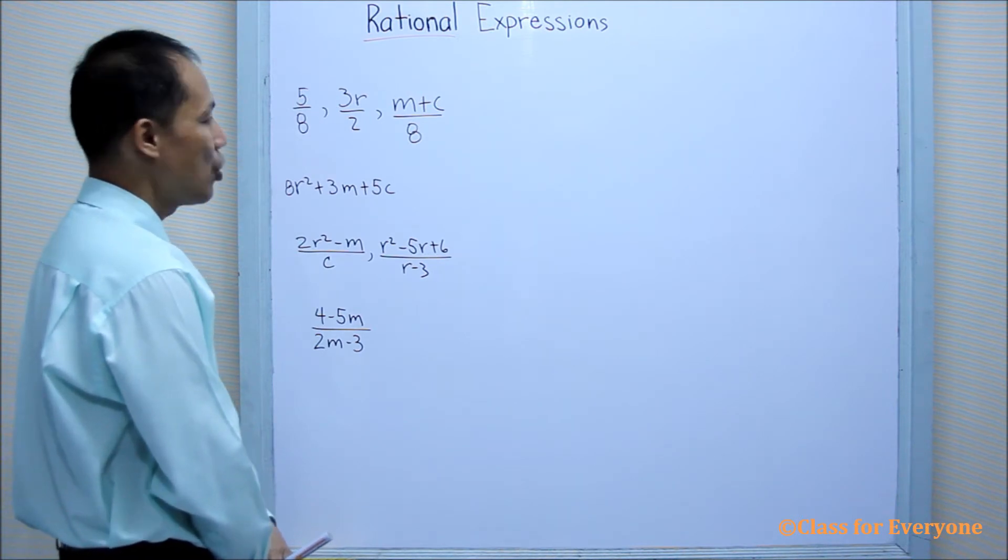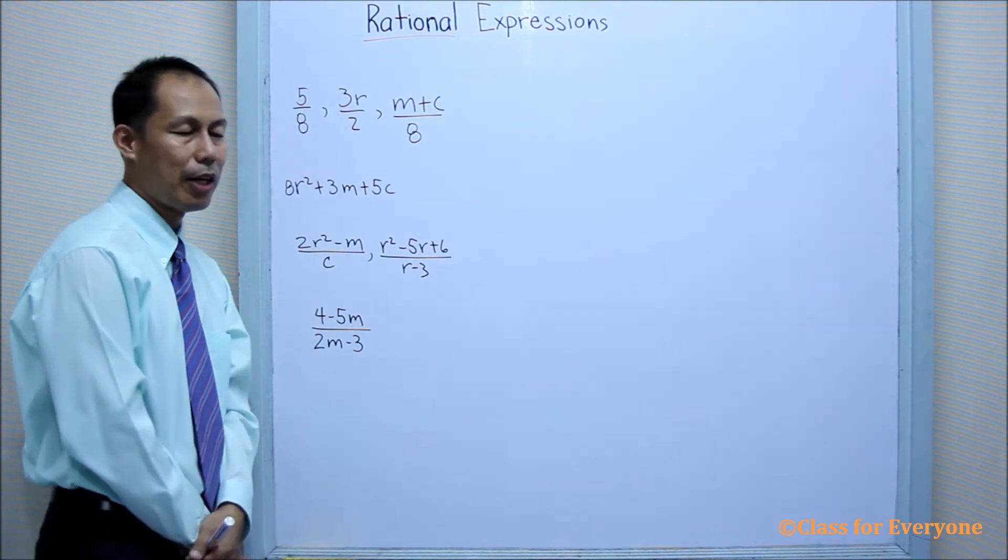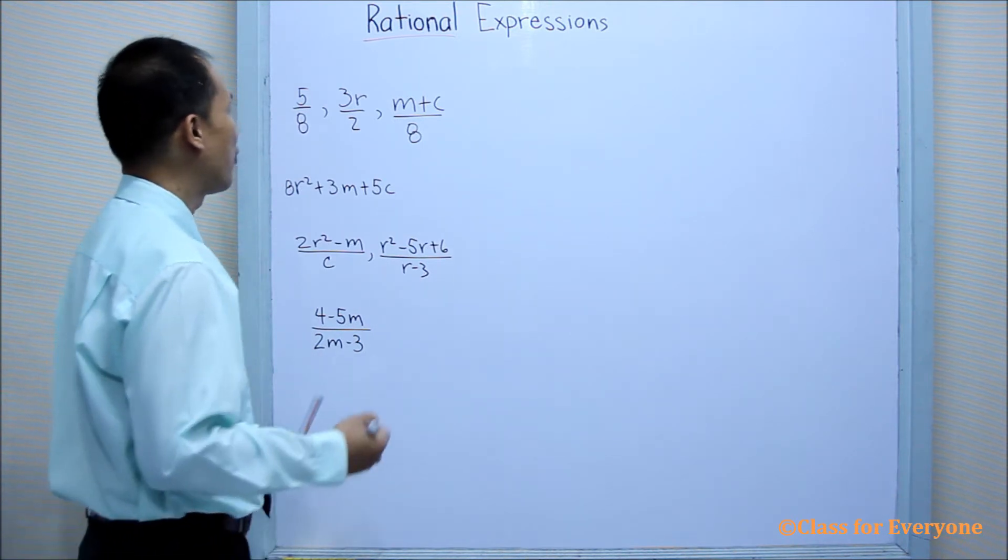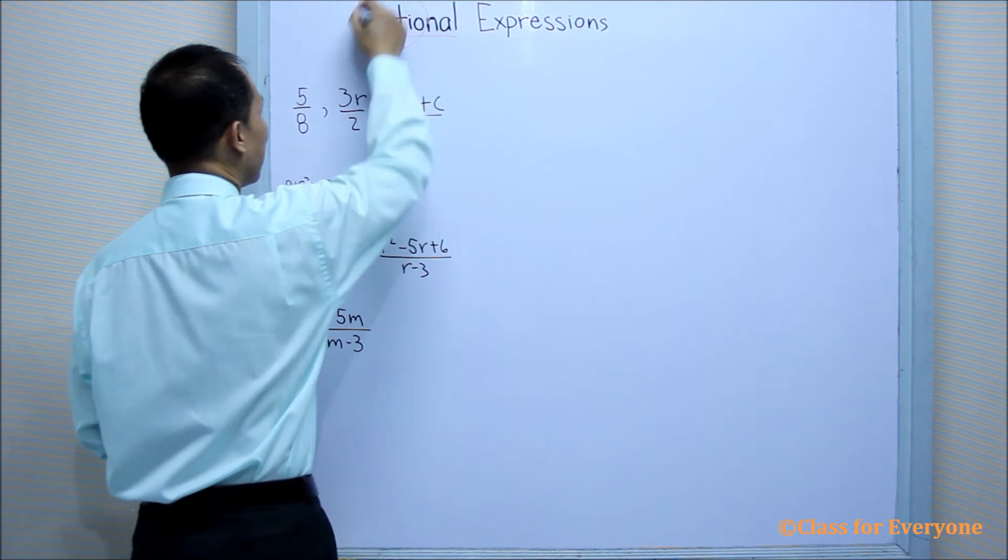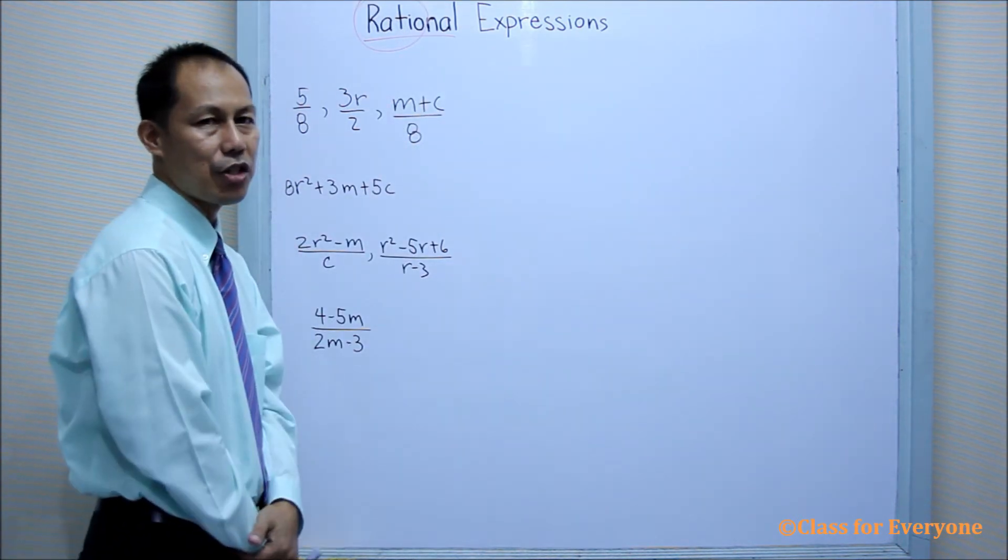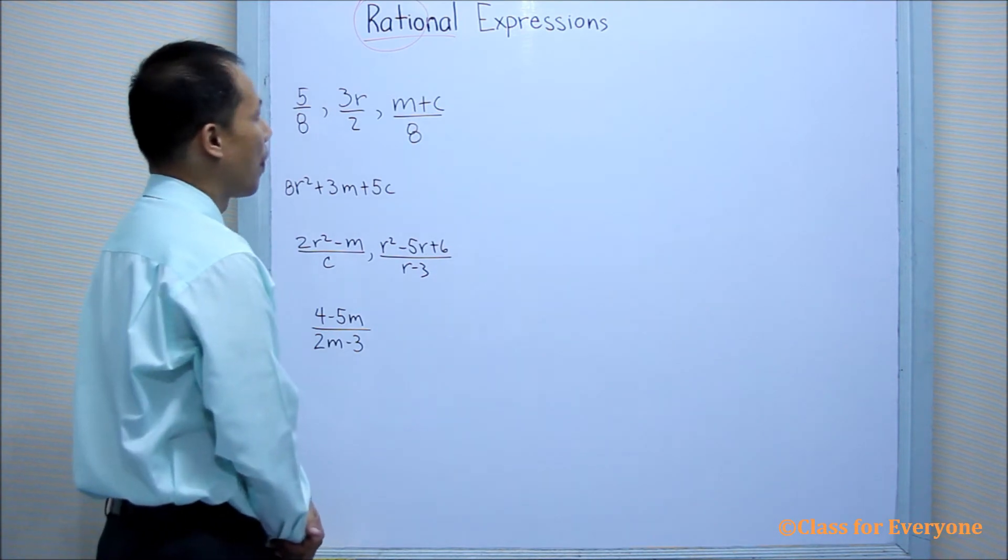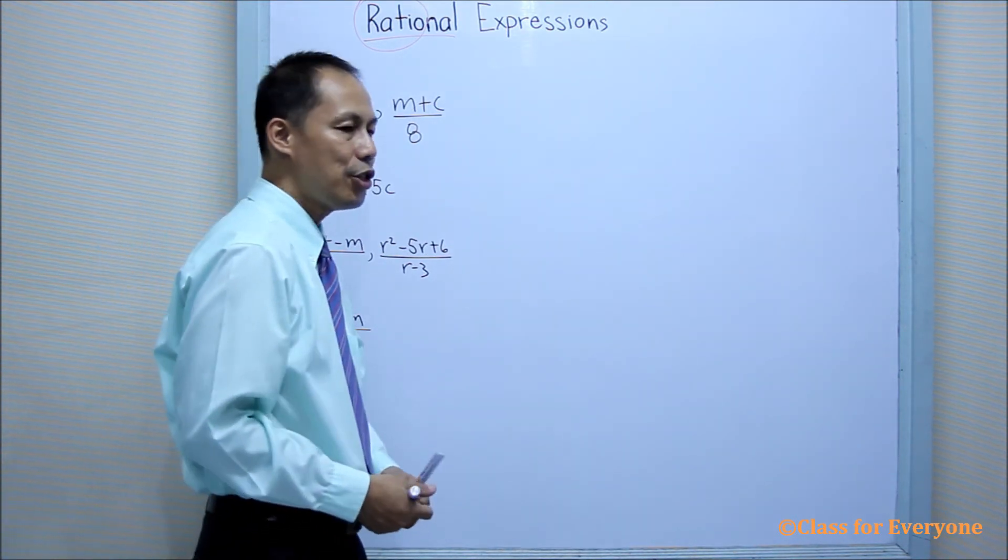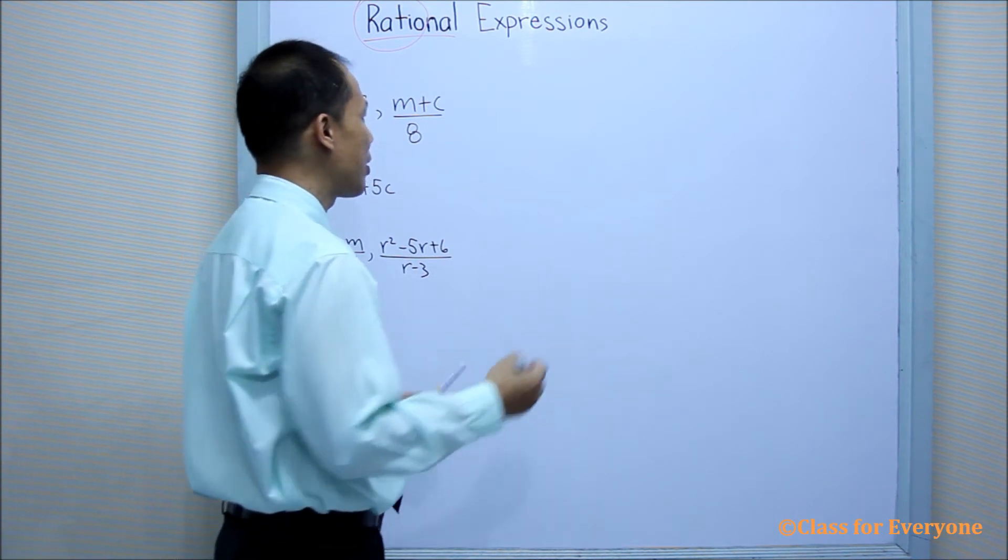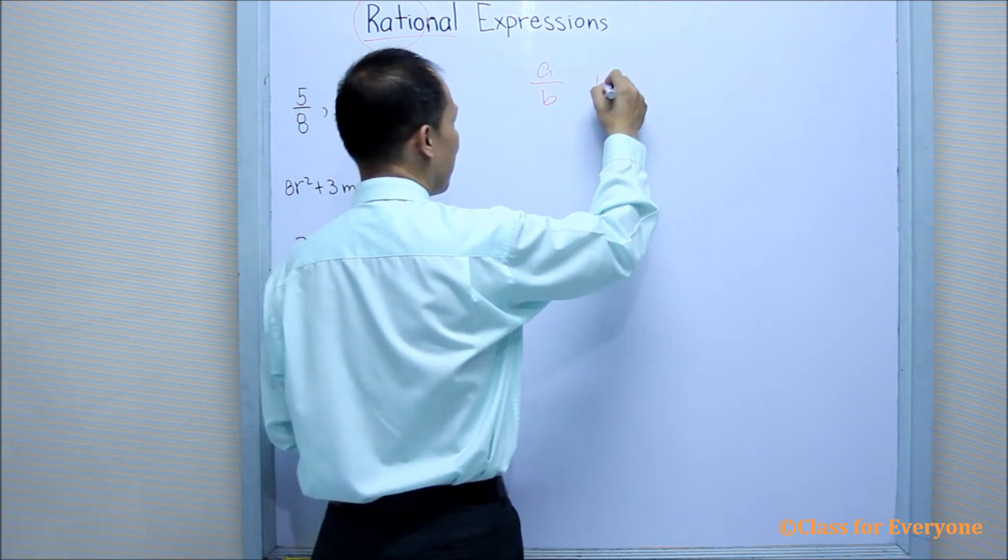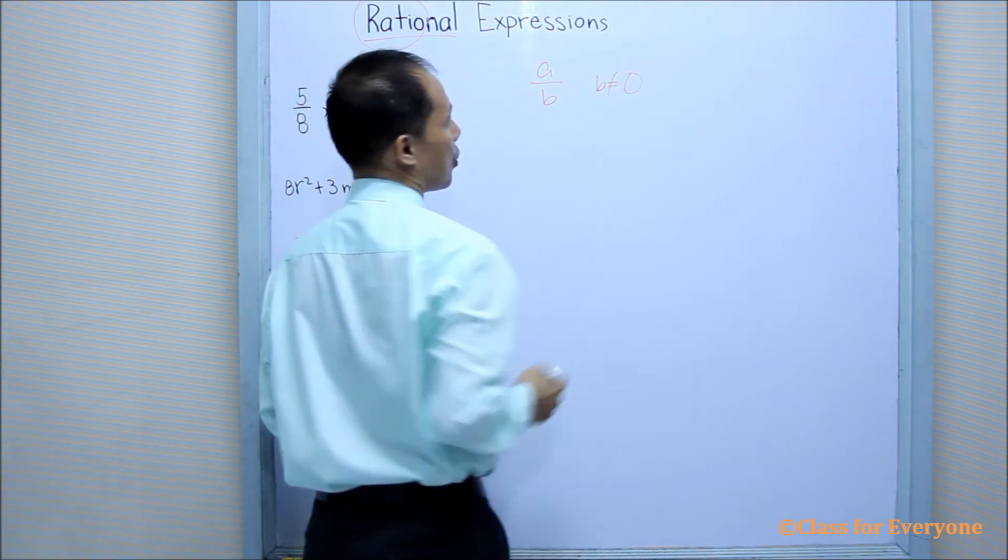Well, those definitions are not applicable in mathematics because in mathematics, rational is derived from the word ratio. And as we know, ratio can be written as a fraction. In the study of real numbers, a ratio can be written as A over B, where B is not equal to zero.